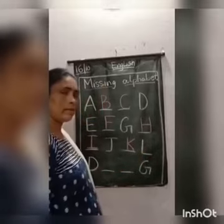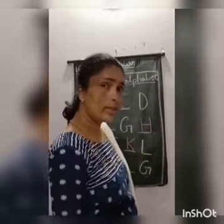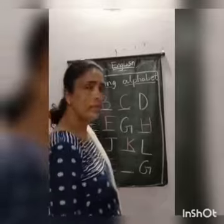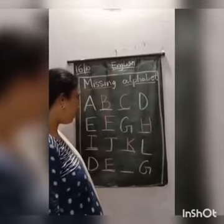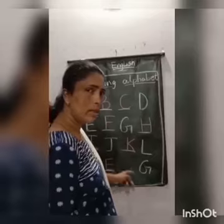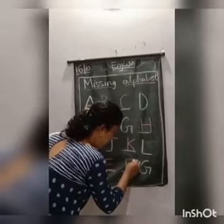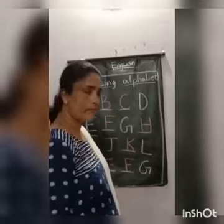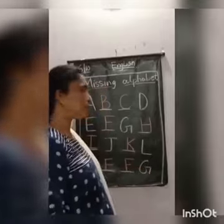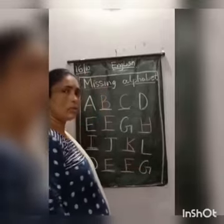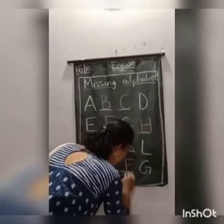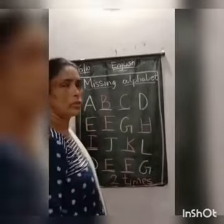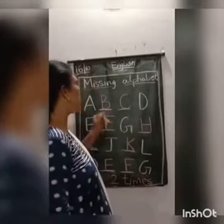Next we have D. After D, what comes, children? E. After D we have E, then after E we have F. What comes after F? Teacher has written G here. This you have to write two times — this is your homework two times.